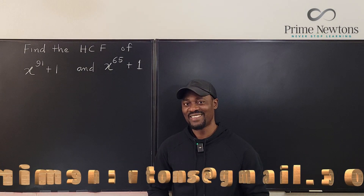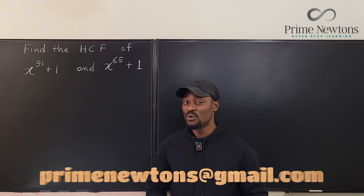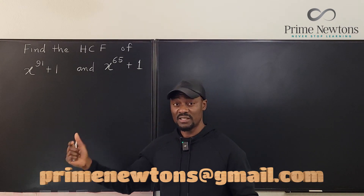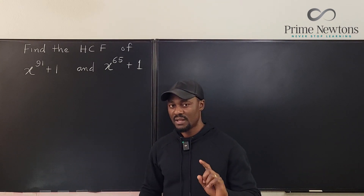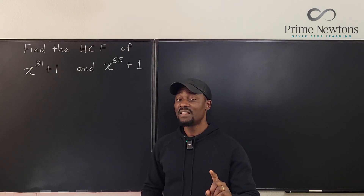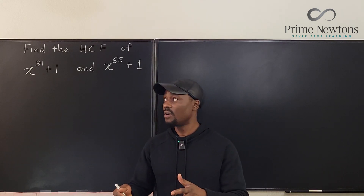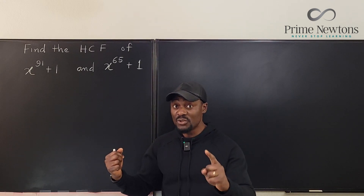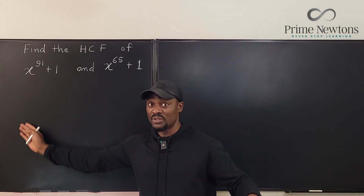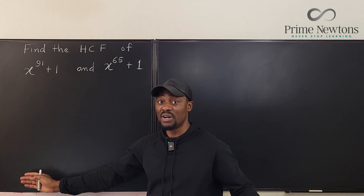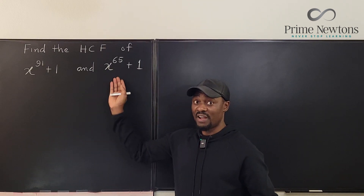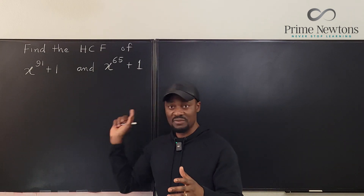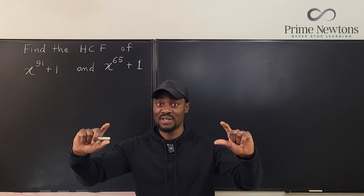Welcome to another video. We have two polynomials: x to the 91 plus 1 and x to the 65 plus 1. The mission is to find the highest common factor of both polynomials, which means you must find all polynomials that divide x to the 91 plus 1 and x to the 65 plus 1, compare them, find the common ones, and pick the highest.